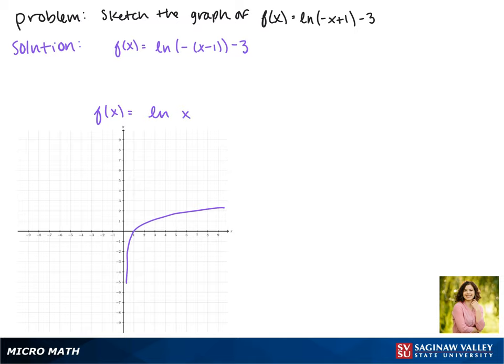We'll start transforming this function by doing the reflections. When we take the log of a negative it reflects our graph over the y-axis. Now our graph passes through the point negative 1, 0.